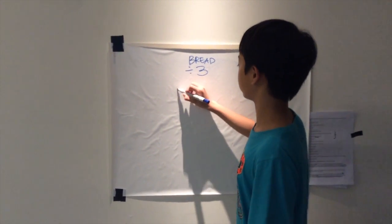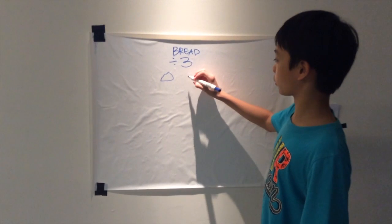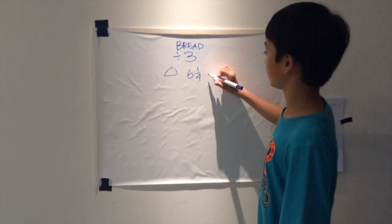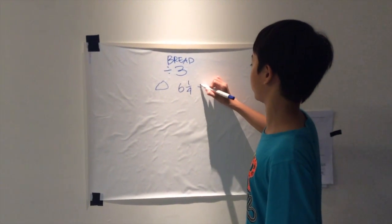For example, the flour. The flour is required six and one-fourth cups. But he wants to only make one bread, so that means he must divide by three.